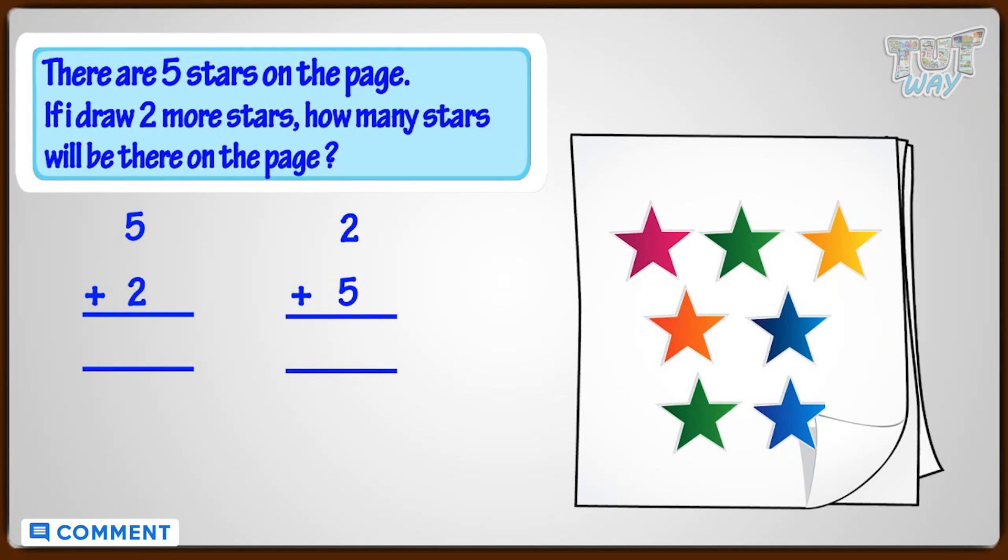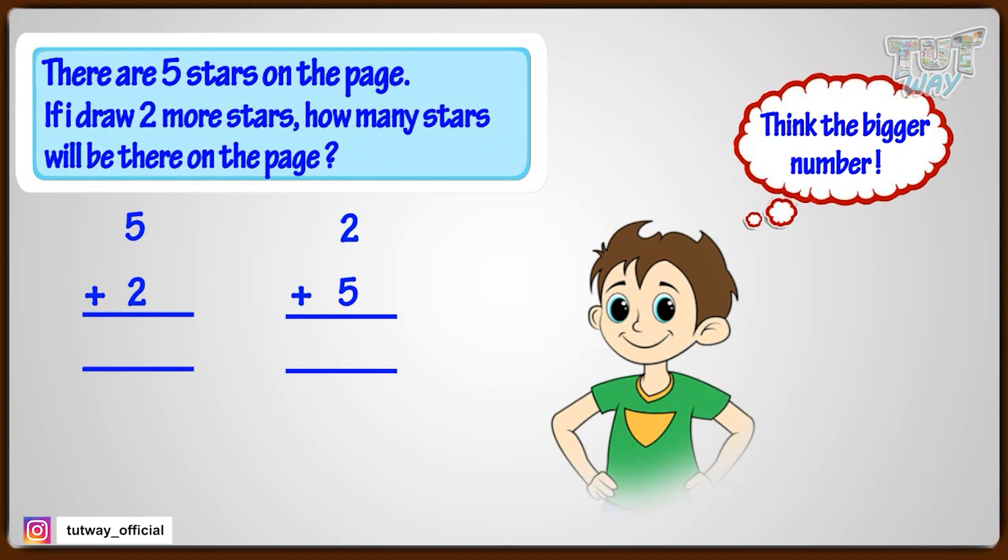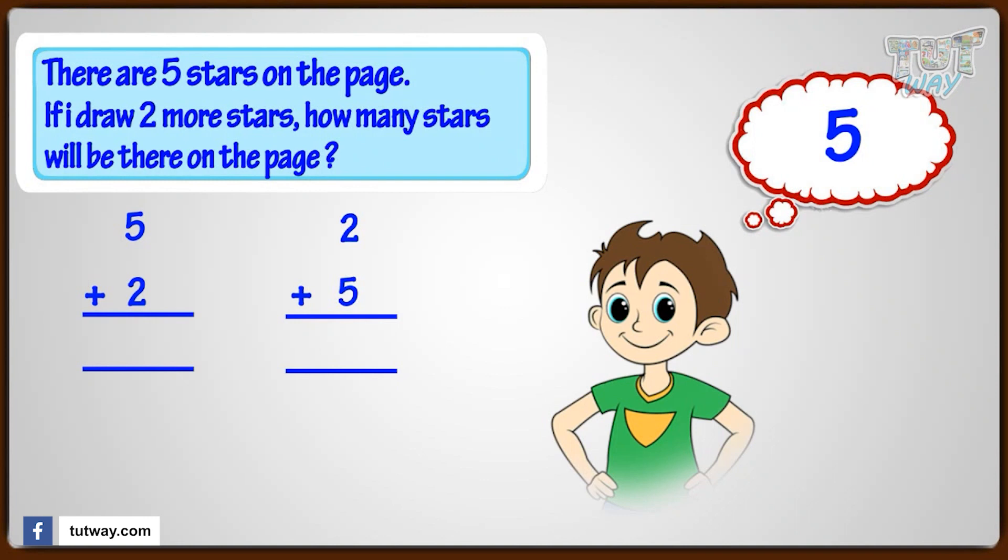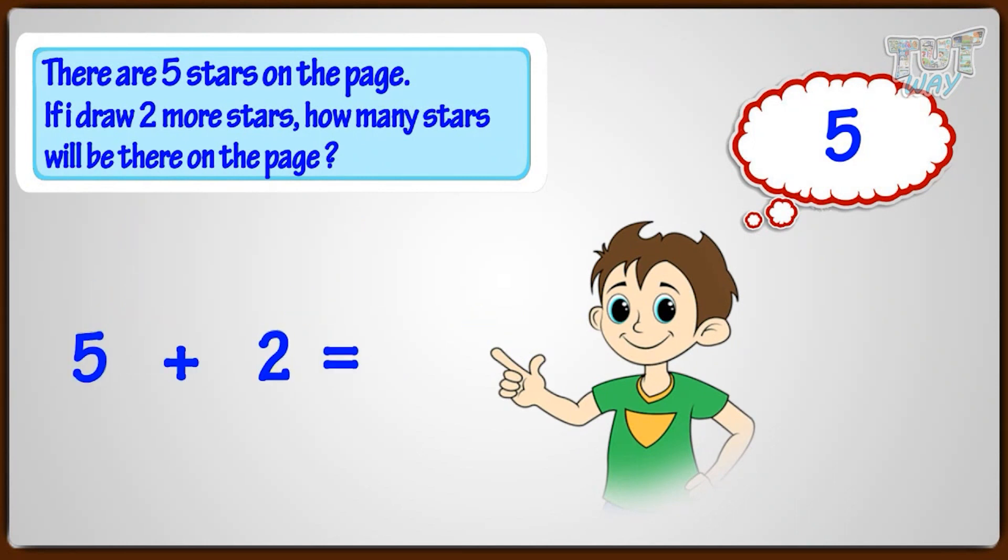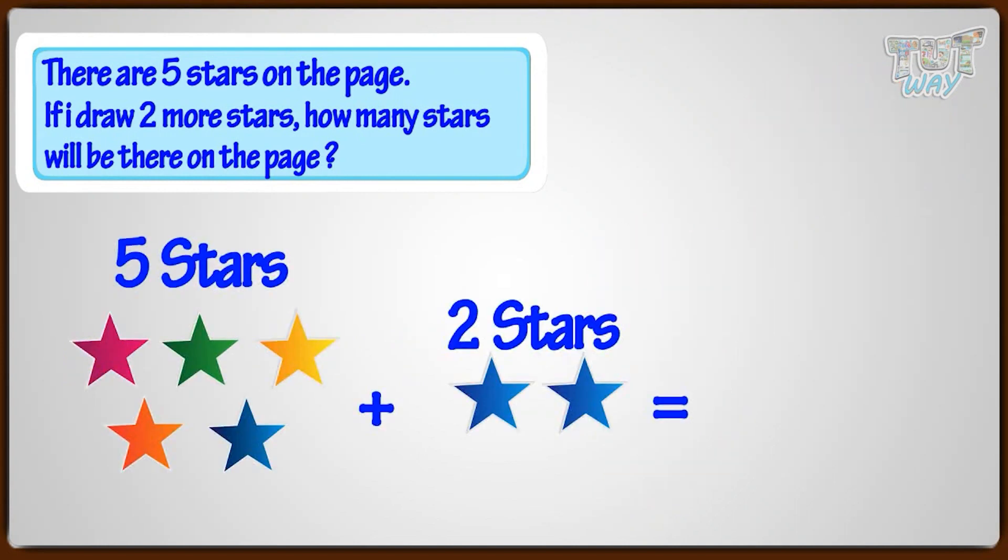So, we have to add 2 and 5. Let me help you do that. Think the bigger number. That is 5. And count up 2. 6, 7. 5 plus 2 equals 7. So there are 7 stars in total.